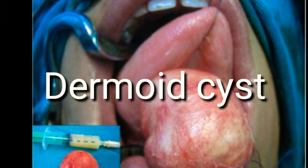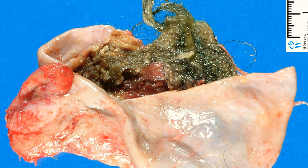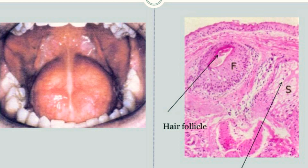Dermoid cysts are relatively uncommon in the oral cavity. The cyst consists of a fibrous wall lined with stratified squamous epithelium which contains hair, sebaceous and sweat glands, as well as tooth structures. They may occur on the hard and soft palate, on the dorsum of the tongue, or more commonly in the floor of the mouth above or below the geniohyoid muscle, usually in the midline.